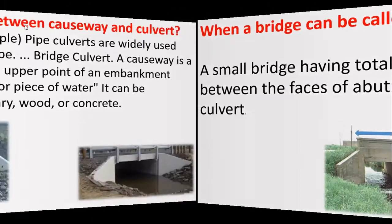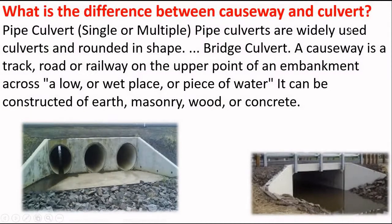What is the difference between a causeway and a culvert? Pipe culverts — single or multiple — are widely used culverts and are rounded in shape. A causeway is a track, road, or railway on the upper point of an embankment across a low or wet place or piece of water. It can be constructed of masonry, wood, or concrete.